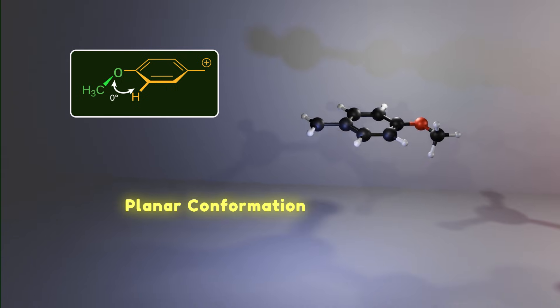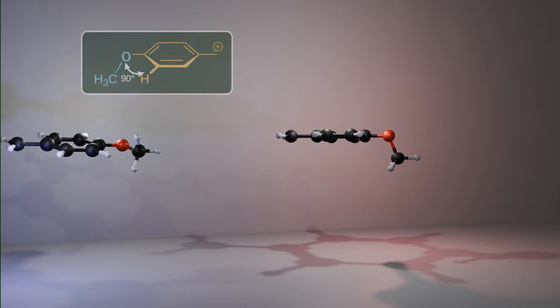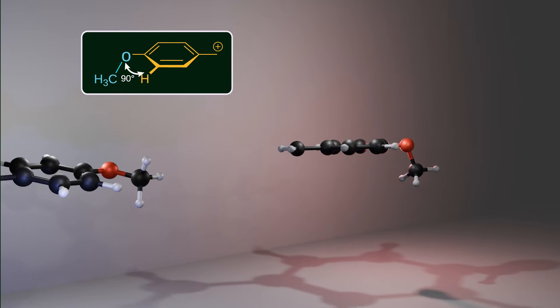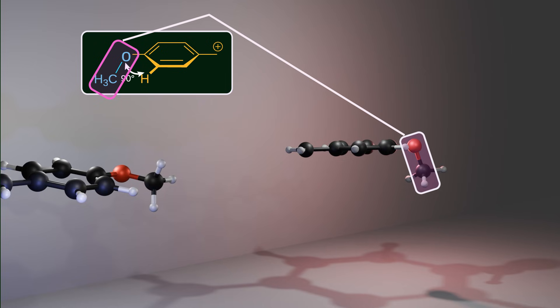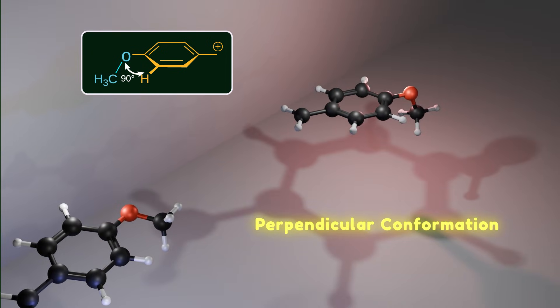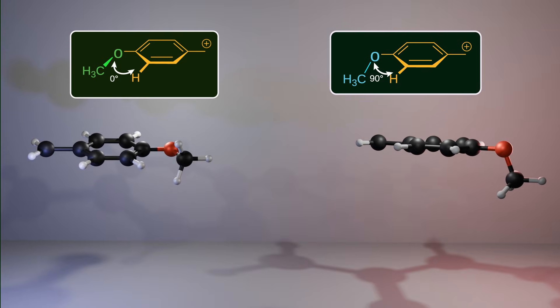As you see, the methyl group and the phenyl ring are coplanar. Now, let's rotate the methoxy group 90 degrees. In this conformation, the angle between the methyl group and the phenyl ring is 90 degrees. It's called perpendicular conformation. The point is, the benzylic carbocation is stabilized by the planar conformation. To understand the reason, let's see the resonance through the lens of orbital interaction.